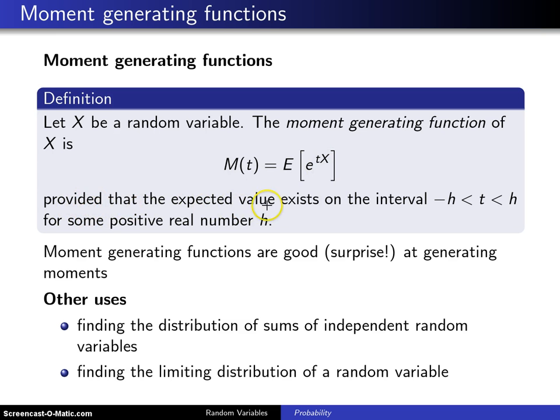Provided the expected value exists on some interval, negative h is less than t is less than h for some positive real number h. This expected value has to exist in some neighborhood about zero.